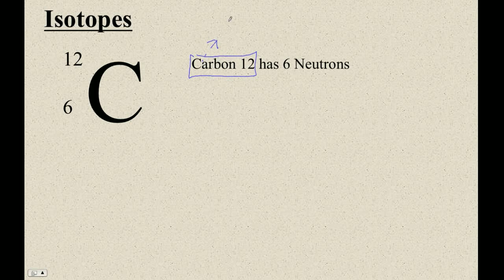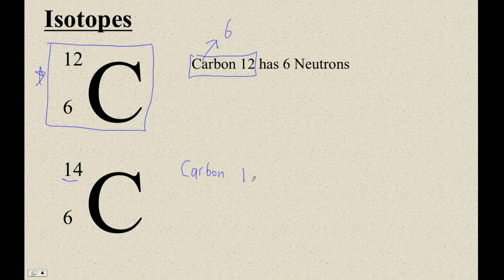Carbon also means element 6. So we can just say carbon 12 and it means exactly the same thing as this. There's also carbon 14. Carbon 14 is the same element but it's a different isotope. Chemically it's the same—it's got 6 protons.